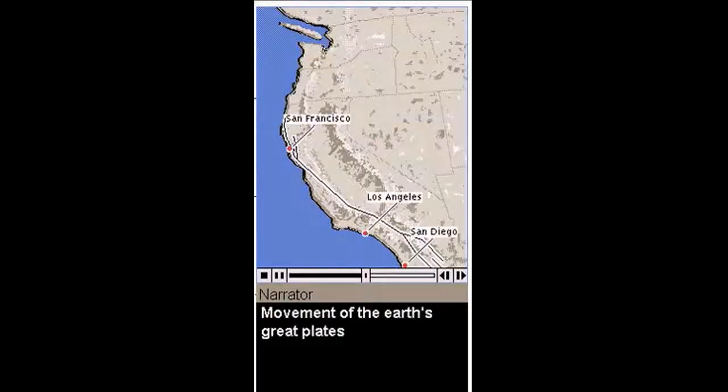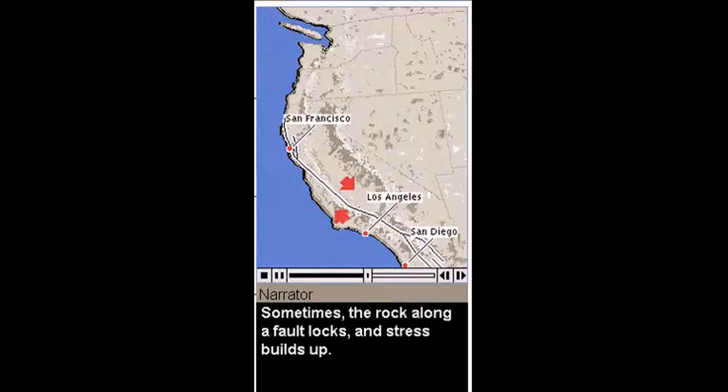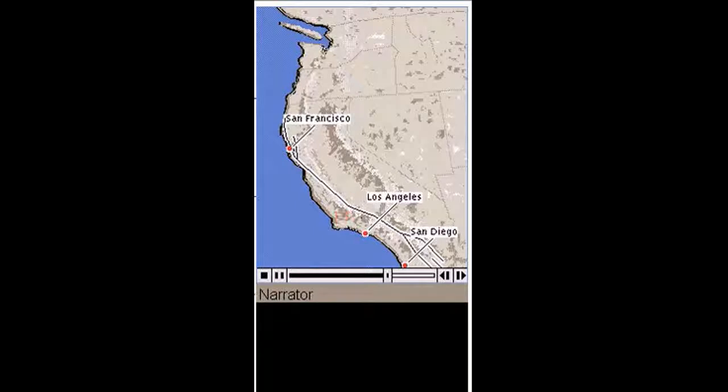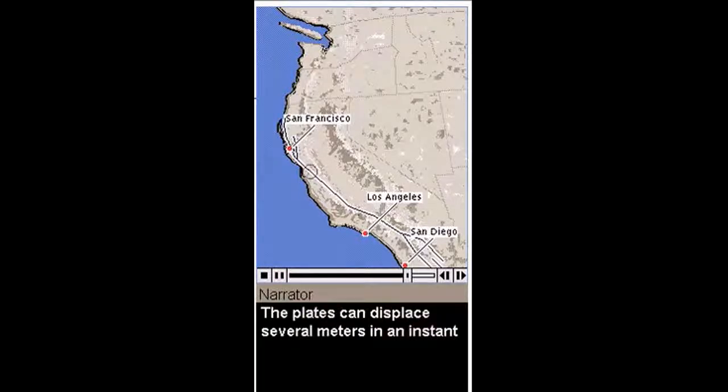Movement of the Earth's great plates is usually slow and steady, causing gradual changes along fault lines. Sometimes, the rock along a fault locks, and stress builds up. Earthquakes occur when the rocks break apart and stress is suddenly released. The plates can displace several meters in an instant, creating a violent wrenching of the Earth's crust, toppling man-made structures and triggering landslides and mudflows.